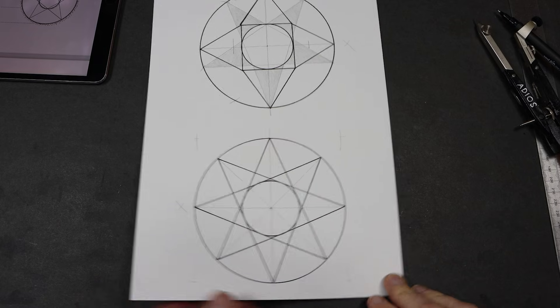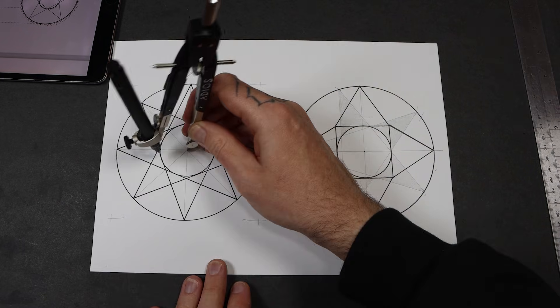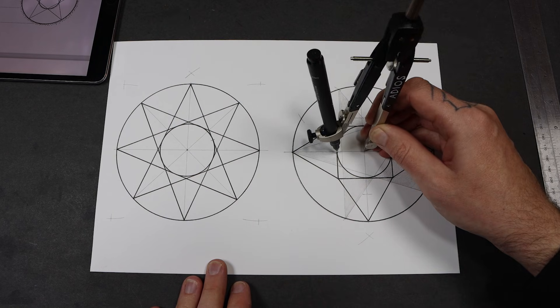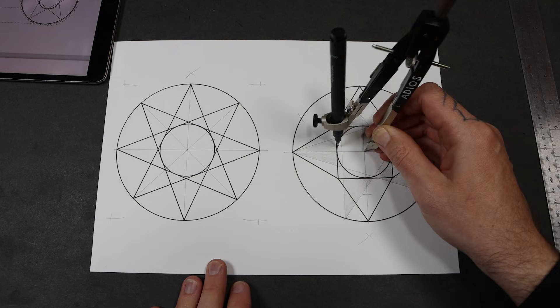So let's see how close that actually is. So that's the size of that circle. And then this one. Oh yeah. It's pretty much exact. Interesting.